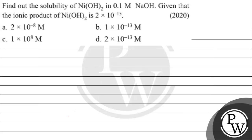Hello, let's read this question. Find out the solubility of Ni(OH)₂ (nickel hydroxide) in 0.1 M NaOH, given that the ionic product of nickel hydroxide is 2 × 10⁻¹⁵. Option A: 2 × 10⁻⁸ M, Option B: 1 × 10⁻¹³ M, Option C: 1 × 10⁻⁸ M, Option D: 2 × 10⁻¹³ M.